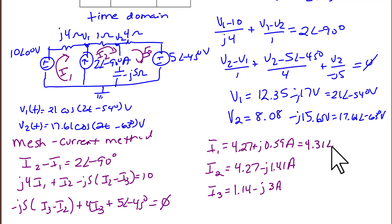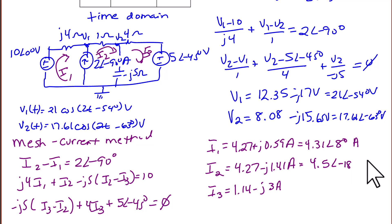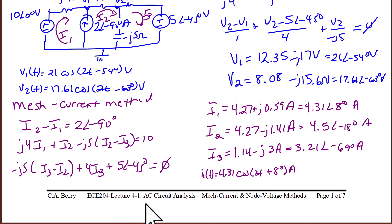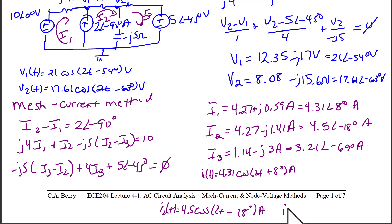In polar form: I1 = 4.31∠8°, I2 = 4.5∠−18°, and I3 = 3.21∠−69°. In the sinusoidal steady state: I1(t) = 4.31 cos(2t + 8°), I2(t) = 4.5 cos(2t − 18°), and I3(t) = 3.21 cos(2t − 69°).